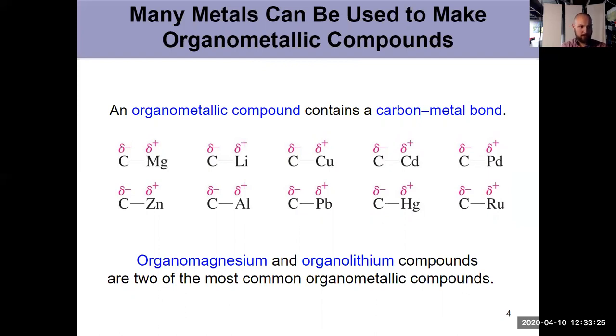What we'll focus on in this chapter are carbon-magnesium, carbon-lithium, carbon-copper, and carbon-palladium bonds. Organomagnesium and organolithium compounds are exceptionally common in the world of organometallic compounds because they have more stable bonds than some of the others.